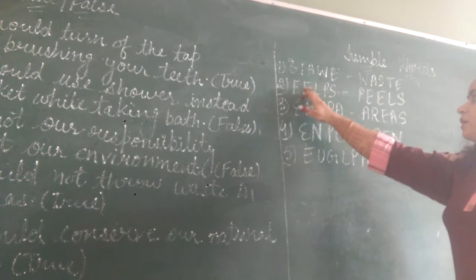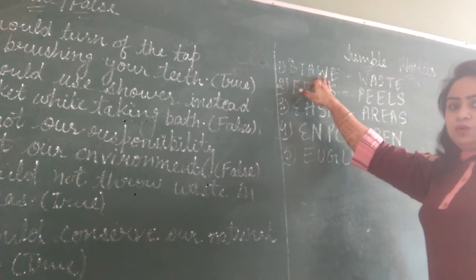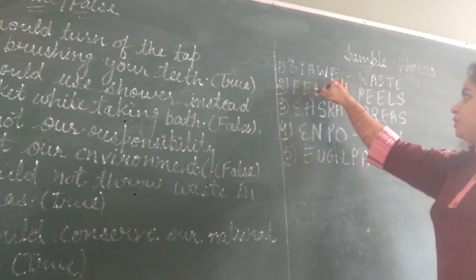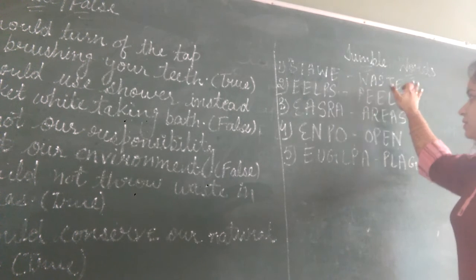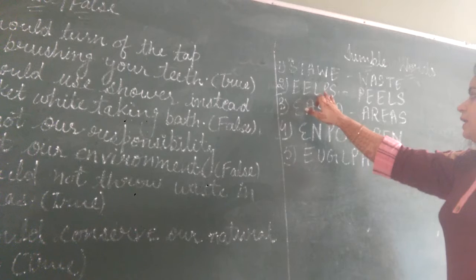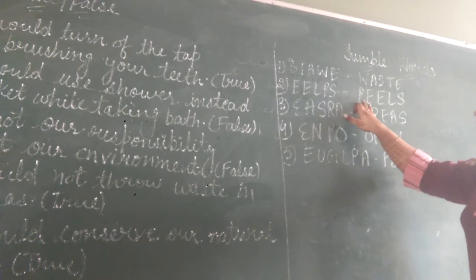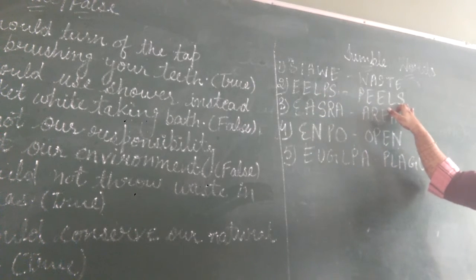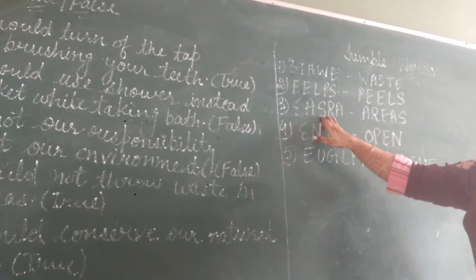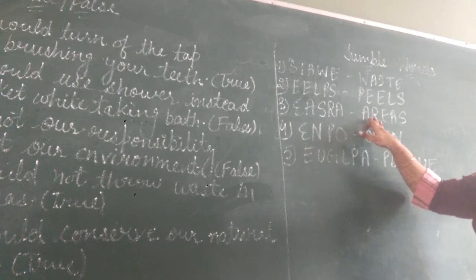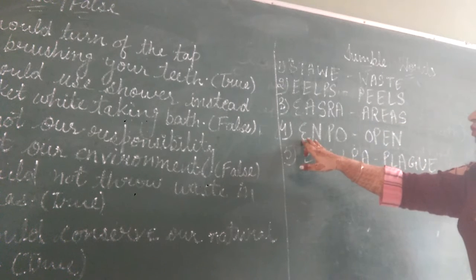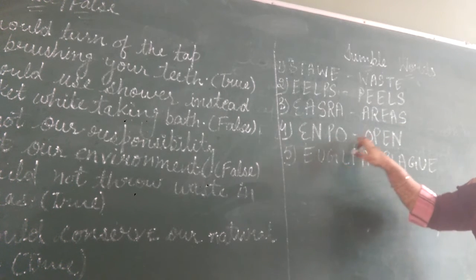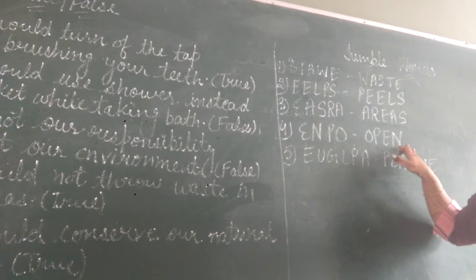Next, jumbled words. First one: S-T-A-W-E — that is W-A-S-T-E, waste. Second: E-L-P-S — that is P-E-A-R-S-A, and the answer is A-R-E-A-S, areas.